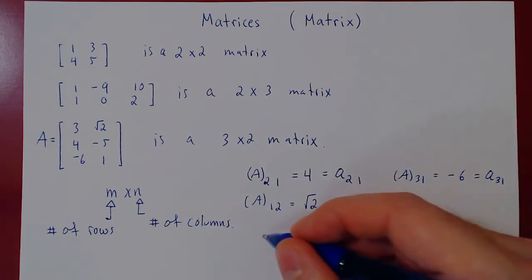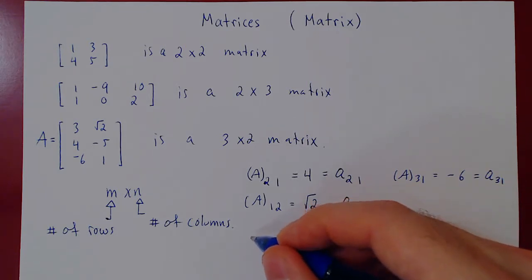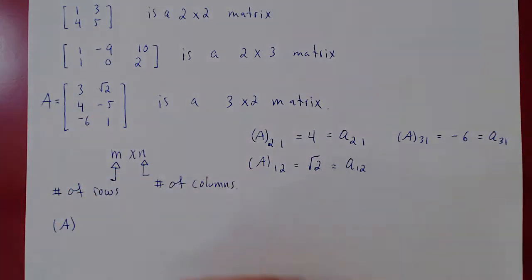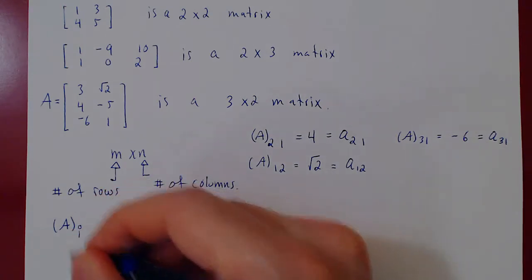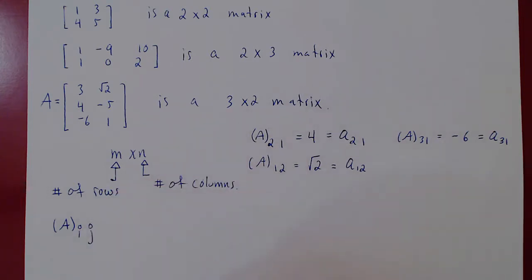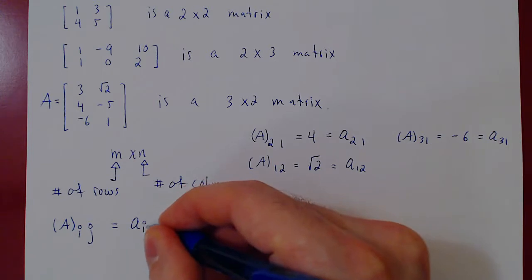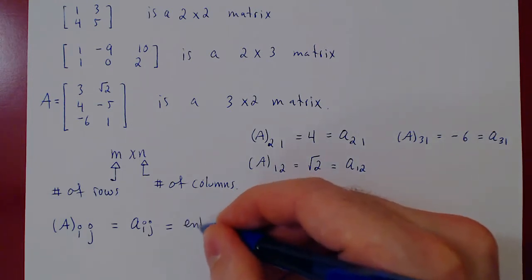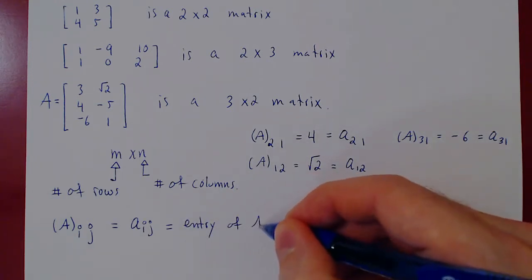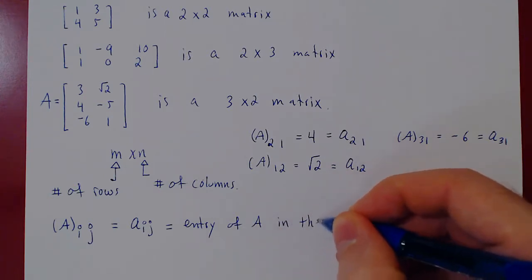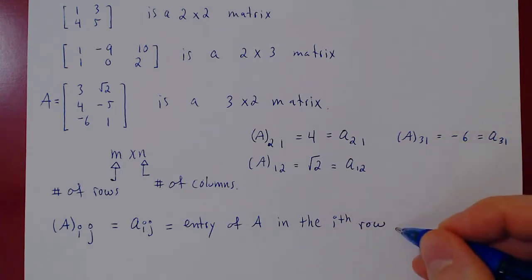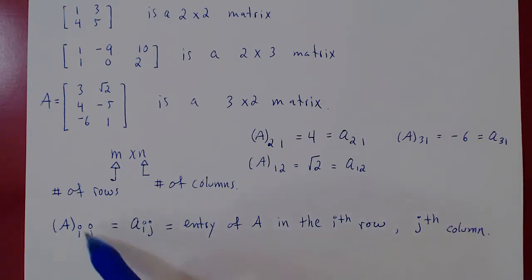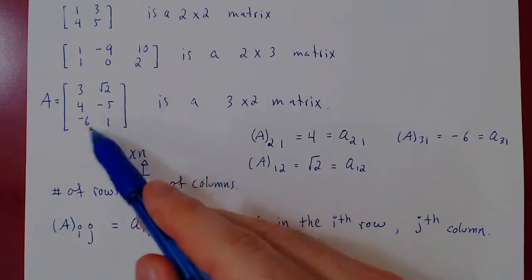In general, given any matrix A, when we write A in round brackets with indices i and j — the first being the row index i and the second the column index j — we can also write this as lowercase aᵢⱼ. This denotes the entry of A found in the i-th row, j-th column. This is a really good notation to specify specific entries of the matrix.